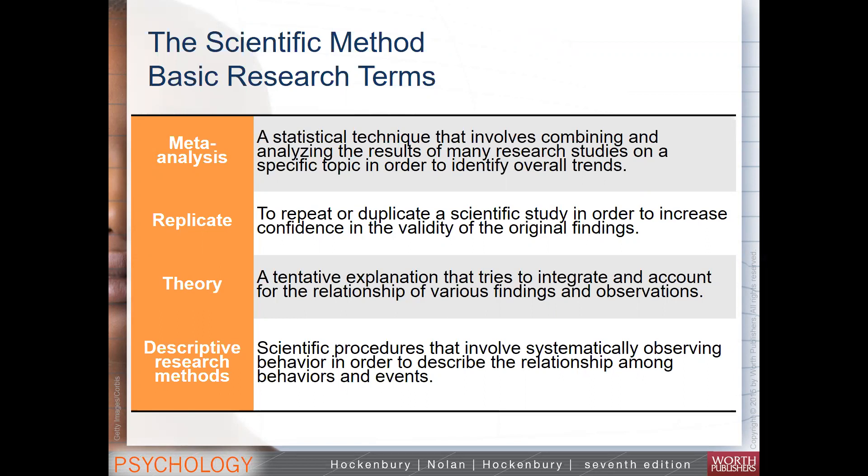We have gone over some of these terms, but I want to reiterate some of these things. For example, we talked about replication, which is very important — if you want a research study to have validation, you want to make sure that you repeat the study with the same parameters so that we can be very sure that that particular study is actually giving us real and factual results. If we don't replicate the study, then we don't really have much confidence in how valid those original findings are.